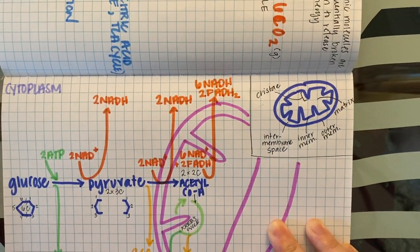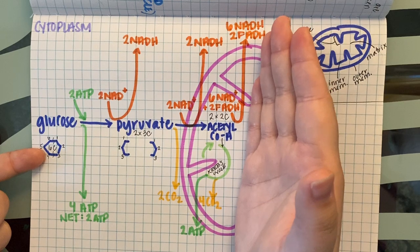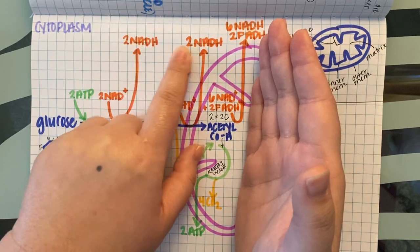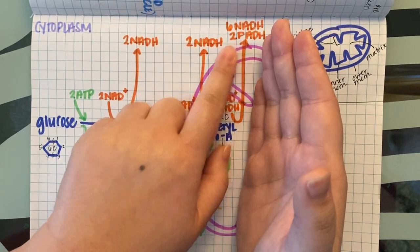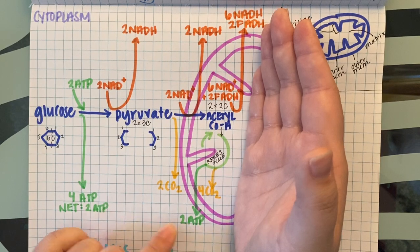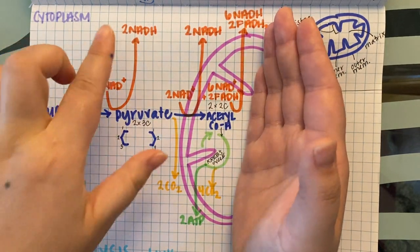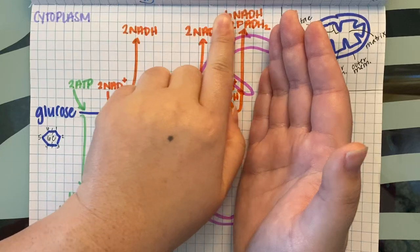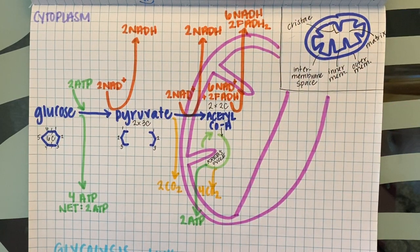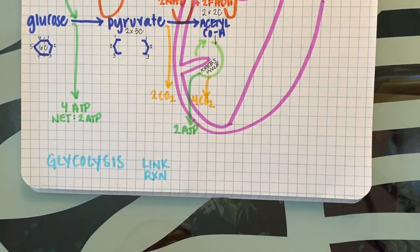By the end of the Krebs cycle, we have finished breaking down glucose. All of the electrons from glucose are now found in our electron shuttles — a total of ten NADH and two FADH2 from the Krebs and link reactions. All the carbon and oxygen has been released as carbon dioxide, and we have a small net release of ATP from the exergonic reactions so far.